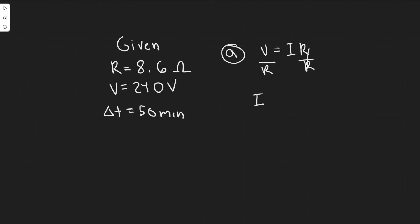So I equals—and we have it in standard units, we have ohms and volts—so the voltage is 240 and the resistance is 8.6 ohms. You do 240 divided by 8.6 and you're going to get 27.906. I'm just going to round it to 27.9. Since we're using standard units, it's just amps, so 27.9 amps. That's part A.